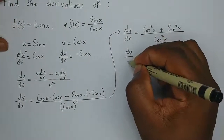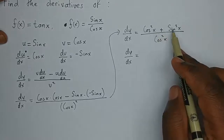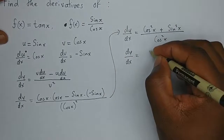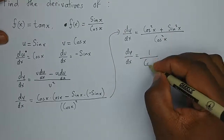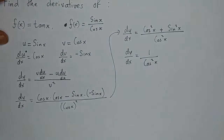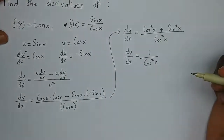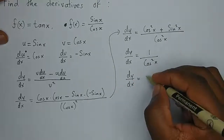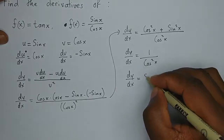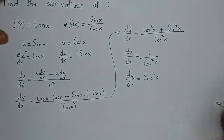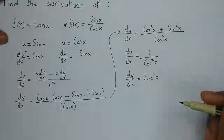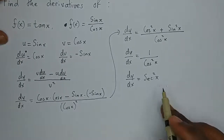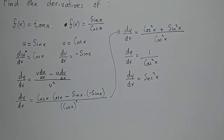Proceeding, dy/dx equals — we know that cos squared x plus sine squared x equals 1, which is the common Pythagorean identity from trigonometry. So what we have is simply 1 over cos squared x. Since 1 over cos is sec, dy/dx equals sec squared x as our final answer. So the derivative of tan x is sec squared x. Thank you very much.